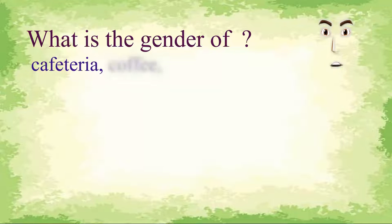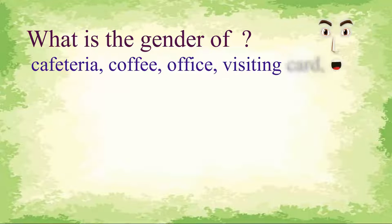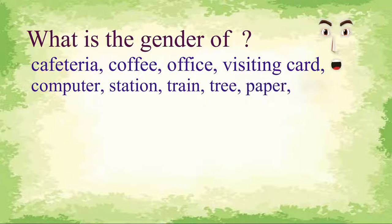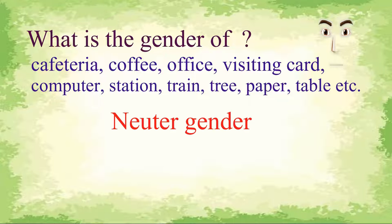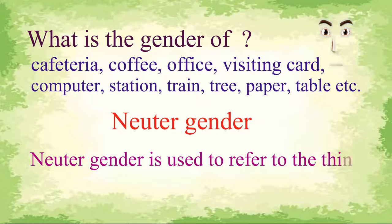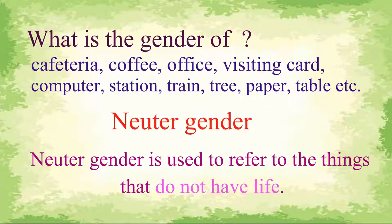Then what gender do we call things that do not have life — like cafeteria, coffee, office, visiting card, computer, station, train, tree, paper, table, etc.? We call them neuter gender. Neuter gender is used to refer to things that do not have life.